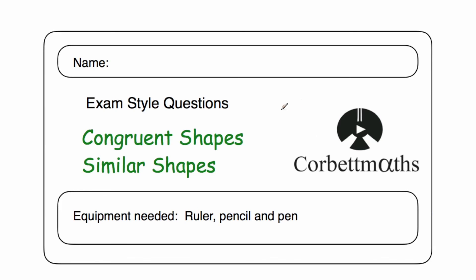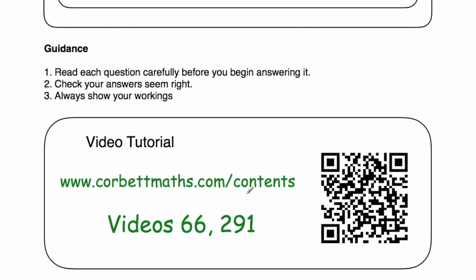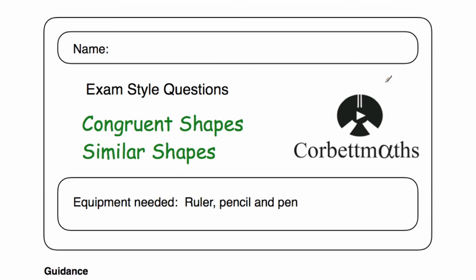These have been the video solutions to the congruent shapes and similar shapes practice questions on CorpMavs. If you need extra help, go to corpMavs.com forward slash contents and scroll down to video number 66 and 291. Also have a look at the similar shapes practice questions on finding lengths of missing sides, and congruent triangles practice questions. I really hope this video has been useful. If you found it helpful, please like it and subscribe to the YouTube channel.